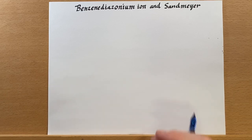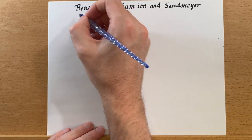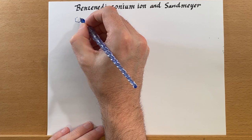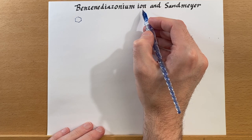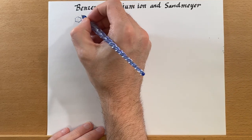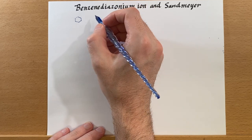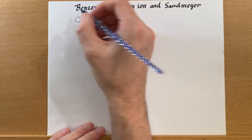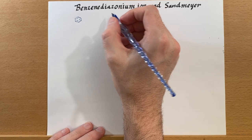We just finished talking about a synthesis of aniline or aromatic amines, and we can use those to generate benzene diazonium ions and then further use those in Sandmeyer reactions. So let's look at one of these Sandmeyer reactions, and then we'll examine the mechanism for generating these benzene diazonium ions.